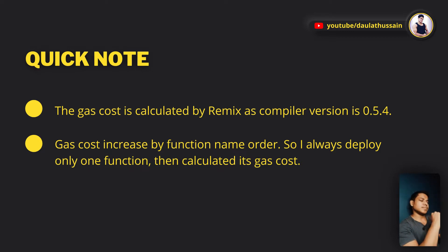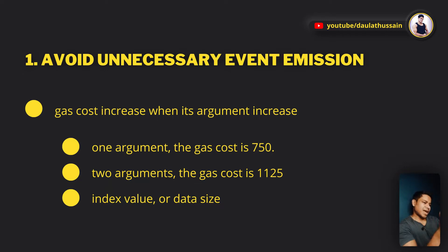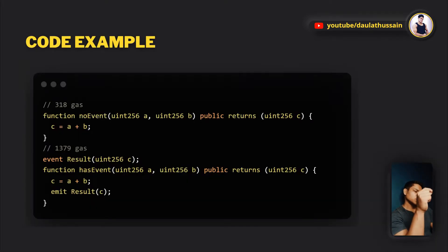Point number one: try to avoid events in your smart contract. One argument in an event will cost you 750 gas; two arguments will cost 1125 gas. The more arguments you have, the more gas you pay. Additional factors like index values and data size also influence the gas price.